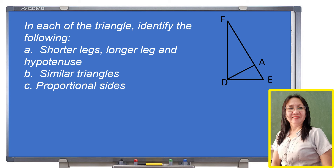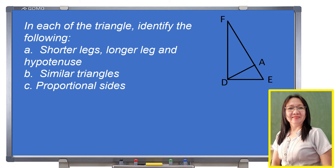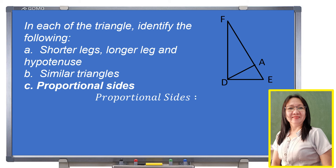For the similar triangles, we have triangle FDE similar to triangle FAD, and similar to triangle DAE. For the proportional sides, first possibility: ED is to DF equals DA is to AF equals AE is to DA — using the pattern of shortest side to longer leg.